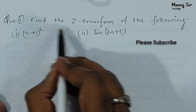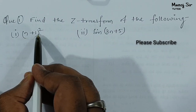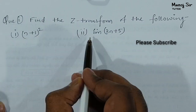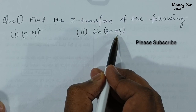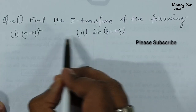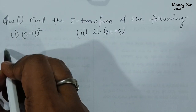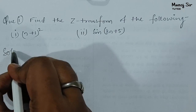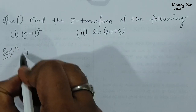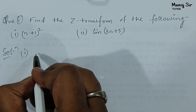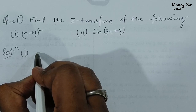The problems are: first, find the Z-transform of (n+1) whole square, and the second one is sine of (3n+5). We will solve one by one. So first, start with the solution — we are solving the first part, that is we need to find the Z-transform of (n+1) whole square.